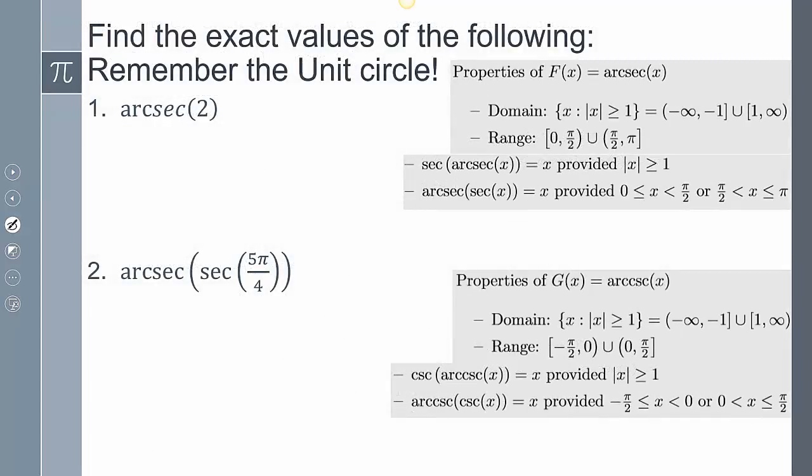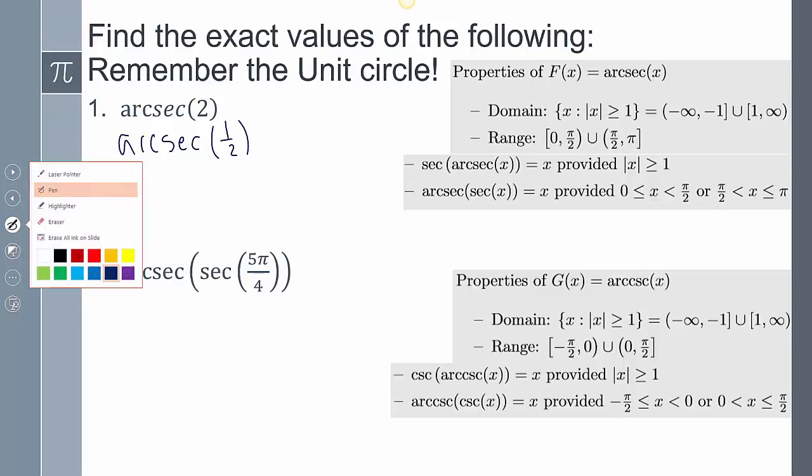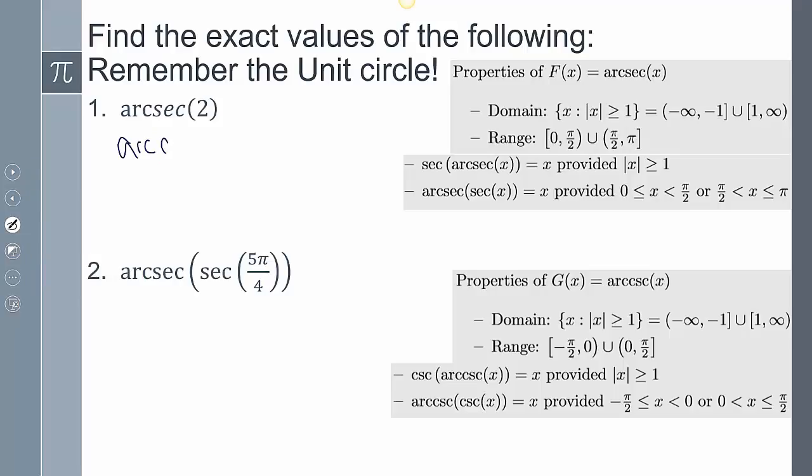arcsecant of 2, well, if I change this arcsecant into cosine, so I get arccosine, and that's going to become 1/2. Well, where is my cosine going to be 1/2? My cosine is 1/2 at π/3 on the unit circle. That's going to be between 0 and π. It's not π/2, so it works.